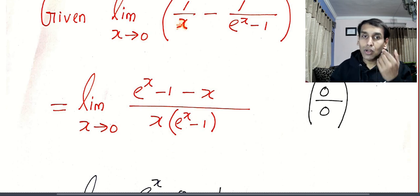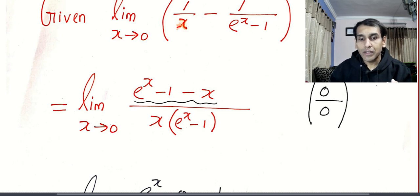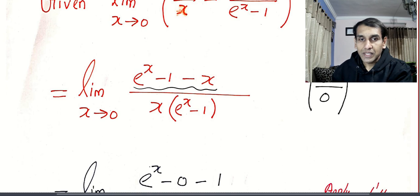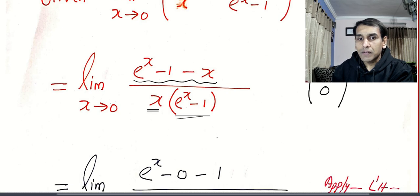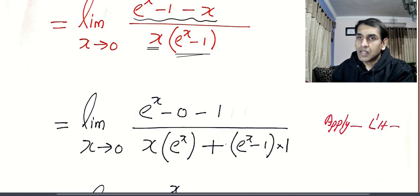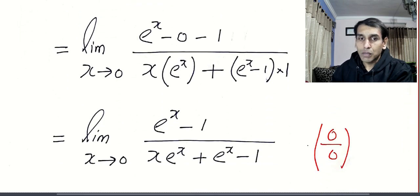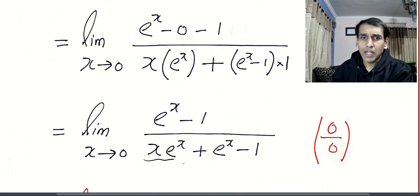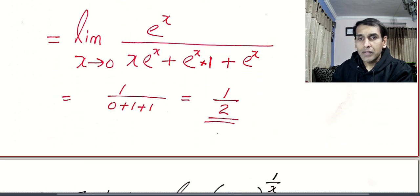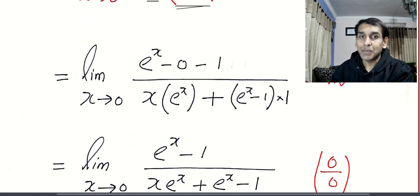Now look at this. 1 by x, what is the first thing to do? 1 by 0 tends to infinity minus 1 by e power 0, which is 1 minus 1. So I got infinity minus infinity. It is already a fraction. So all I have to do is apply or take the LCM. Now look at this. I got 0 divided by 0. If I get 0 divided by 0, what will I do? I will apply L'Hôpital's rule which tells me differentiate the numerator and denominator. But the problem with this method is, again I got 0 divided by 0. The final answer is 1 by 2. But I will give you one easy method.